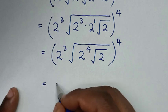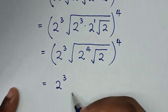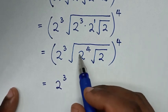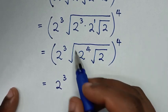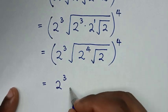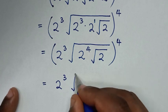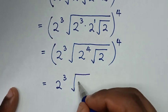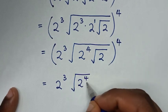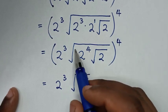Then it will be equal to 2 power 3. Here it will be 10, here it will be 9, here it will be 10. Here 2 power 4, here it will be 10. Square root of 2 power 4.